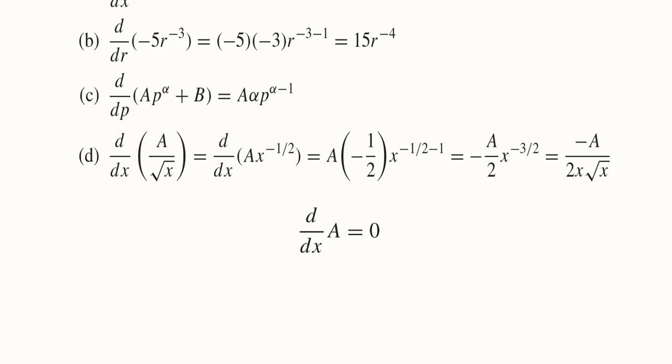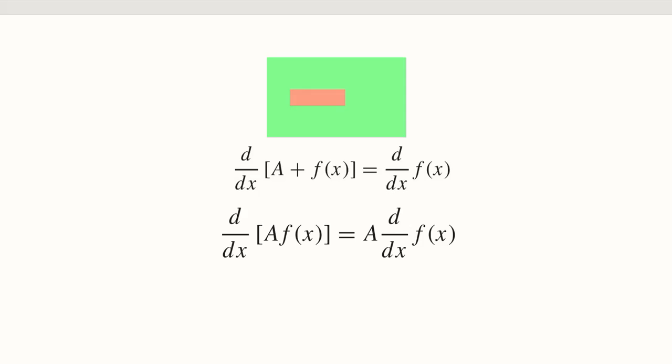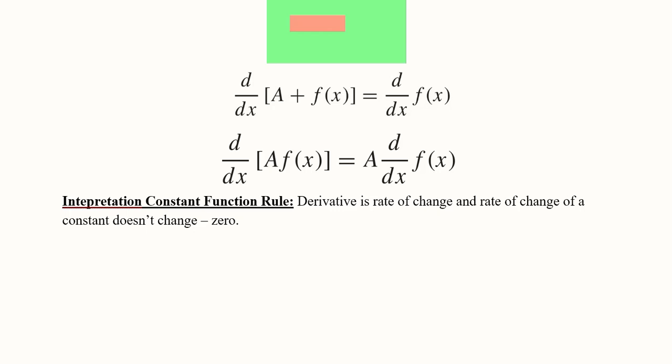When a is a constant, its derivative is zero — this is the constant function rule. An important distinction: if a constant appears as a separate term, it reduces to zero when differentiated. However, if a constant is multiplied with a function f(x) as a coefficient, it comes outside without reducing to zero, and we take the derivative of f(x) multiplied by that coefficient.